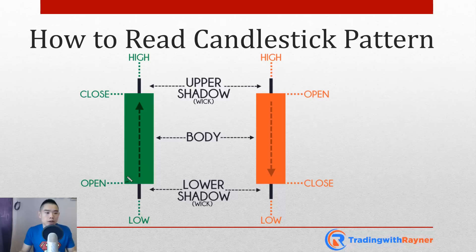When you see a green candlestick, it means the price has closed higher for the session. The opening price is at the bottom, the closing price is at the top. The black shadow above is called the upper wick — this represents the highs of the session — and below is the lows of the session.